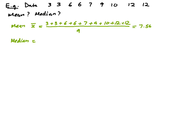Now let's find the median. We have: 3, 3, 6, 6, 7, 9, 10, 12, 12. I remove the outermost values one by one — remove 3 and 12, then 3 and 12 again, then 6 and 10, then 6 and 9. I end up with one value in the middle, which is 7. So the median is 7.